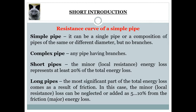According to their main definitions, simple pipe can be defined as a single pipe or a composition of pipes of the same or different diameter, but no branches. A complex pipe can be any pipe having branches.